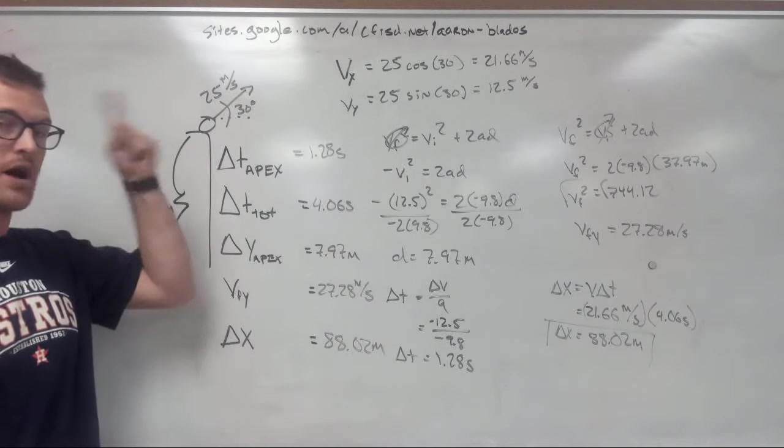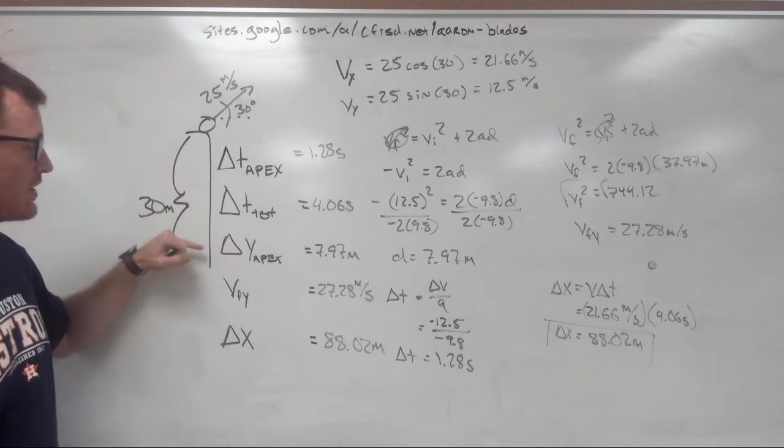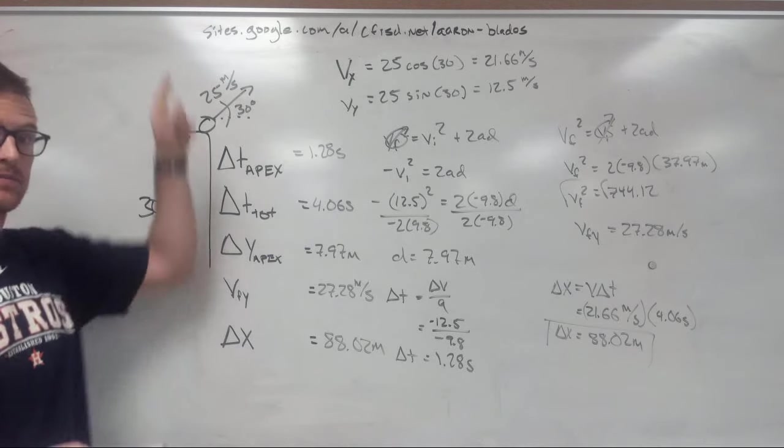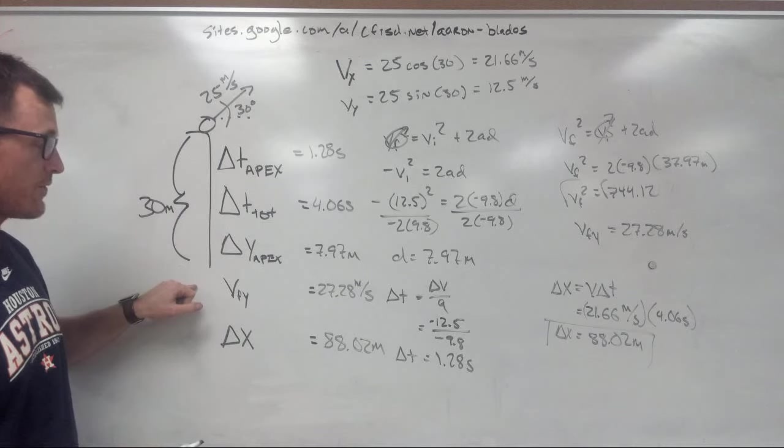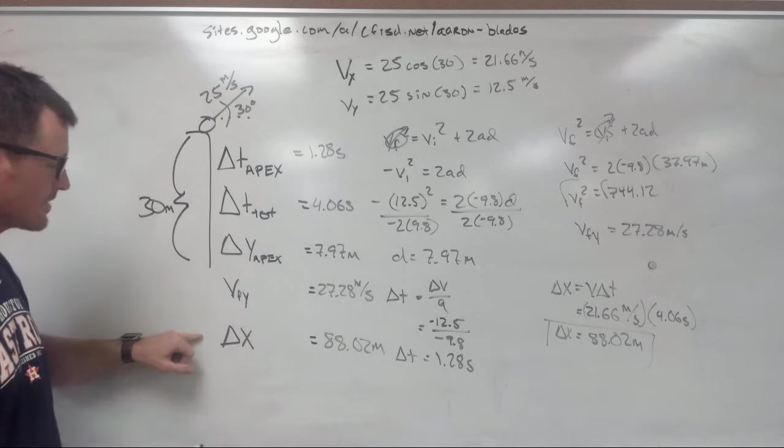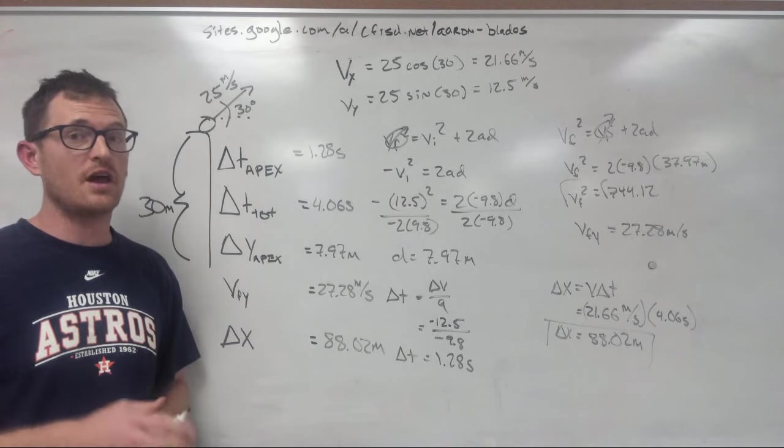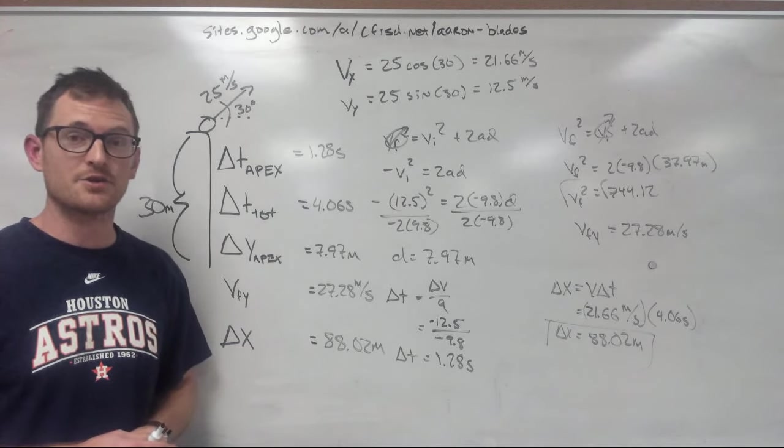We've solved for the time it takes to go up, the total time it's in the air, the change in Y up to the top, how fast it's moving in the Y direction as it plummets to the ground, and our horizontal displacement over that entire period. I hope that was helpful. I'll see you in class, and go Strohs!